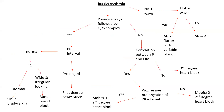Bradyarrhythmias are often caused by heart blocks. Normal PR interval is 120 to 200 milliseconds. A prolonged PR interval indicates first degree heart block. If every P wave is not followed by a QRS complex, it may be either second or third degree heart block. In third degree or complete heart block, there is complete dissociation between atrial and ventricular activities, and you will see P waves and QRS complexes appearing at their own independent intervals on the tracing. Bundle branch blocks can be appreciated if you see wide, abnormal-looking QRS complexes, especially in the chest leads.